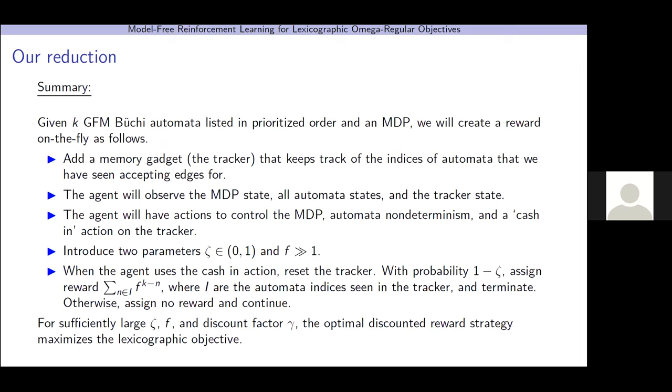So, let me summarize the reduction. We're given k good-for-MDP Büchi automata, listed in prioritized order, and an MDP. We're going to create a reward on the fly as follows. We're going to add a memory gadget that keeps track of the indices of the automata for which we've seen accepting edges. The agent will observe everything, the MDP state, all the automata states, and the tracker state. The agent will have actions to control the MDP, automata non-determinism, and an additional cash-in action on the tracker. We're going to introduce two parameters, zeta and f. When the agent uses the cash-in action, we're going to reset the tracker. With probability 1 minus zeta, we'll assign this exponentially weighted reward and we'll terminate. Otherwise, we'll assign no reward and let the agent continue. So, for sufficiently large zeta, f, and discount factor, the optimal discounted reward strategy maximizes the lexicographic omega regular objective.